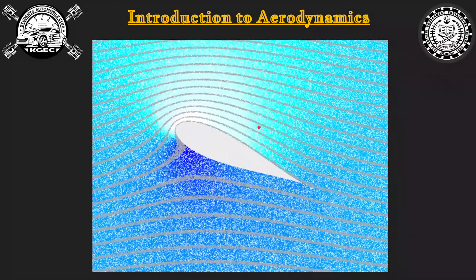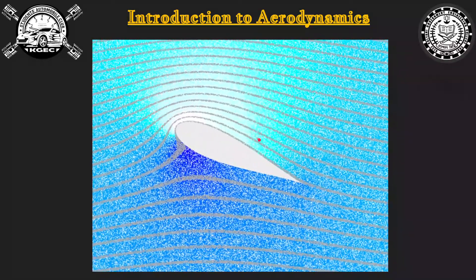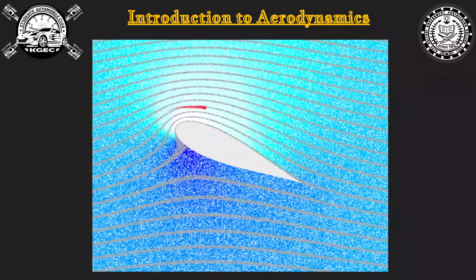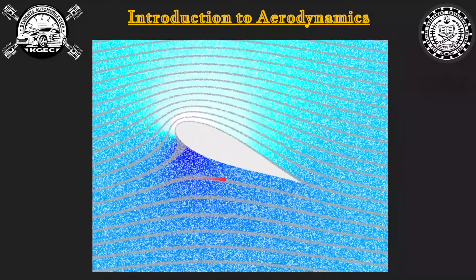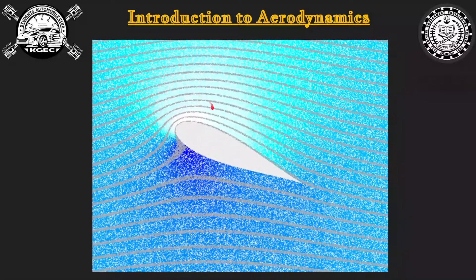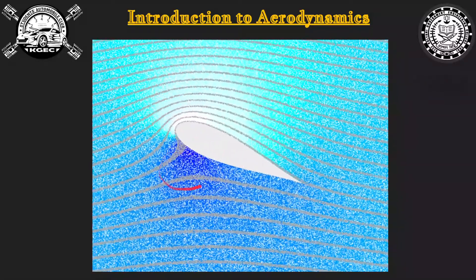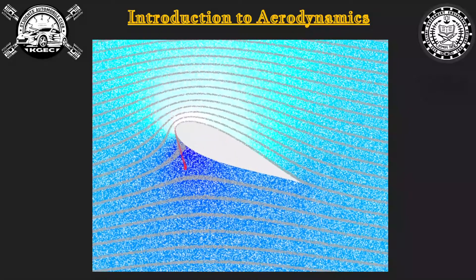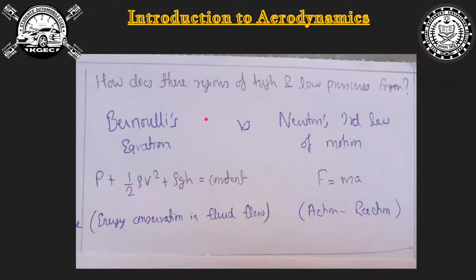This animated gif shows the air stream very well. The air particle speeds up on top and slows down on the bottom, creating a low pressure region on top and a high pressure region on the bottom. This difference in pressure creates lift — that is the Bernoulli's equation statement. Now let us look at our second candidate: Newton's third law of motion.